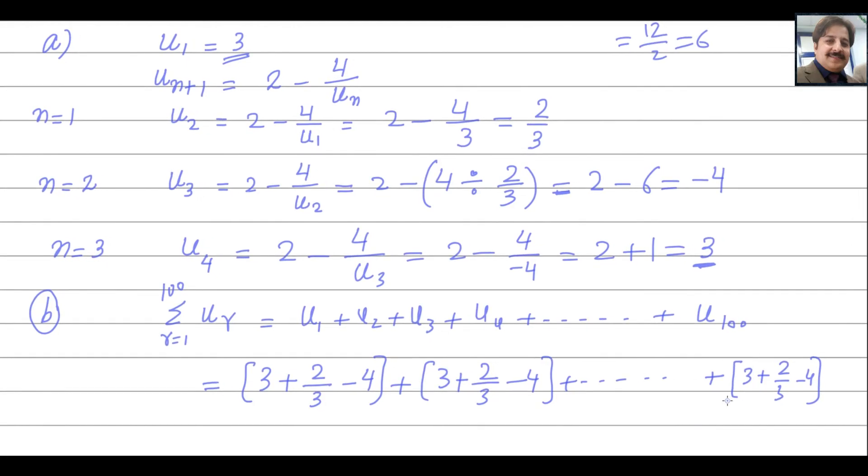But we want to find the sum of 100 terms. So 100 term will start with 3. There will be 33 such terms. 33 will multiply by this number, 2 over 3 minus 4, and then this is the 100th term. 100th term is 3. These are 99 terms and this is 100th term.